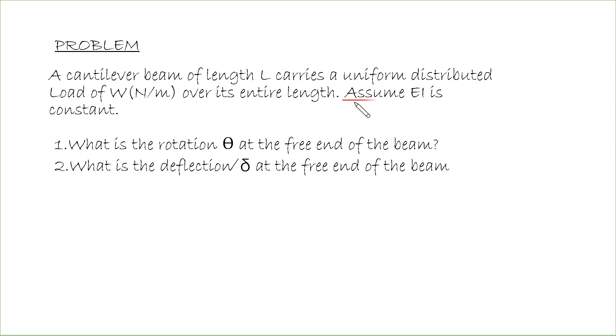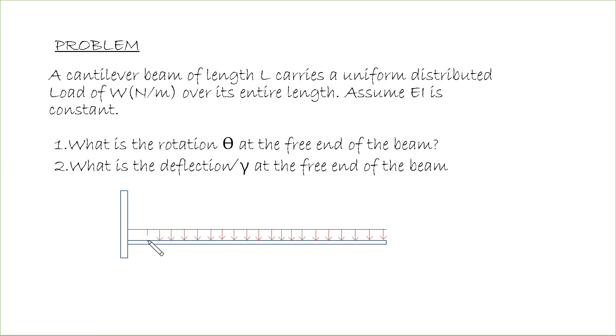When we see EI is constant here, it means the beam is uniform in size. A cantilever beam is a member with one end projecting beyond a point of support, free to move in a vertical plane under the influence of vertical loads placed between the free end and the support. We have a uniform load of W here and a length L.